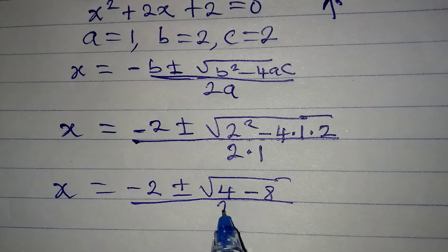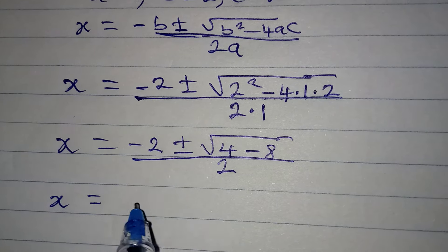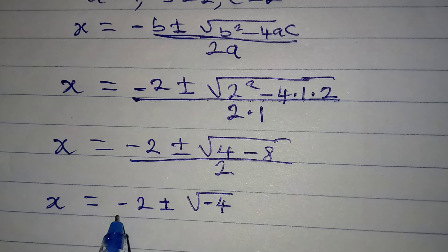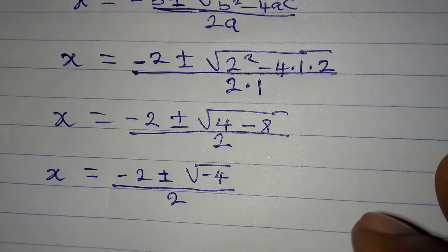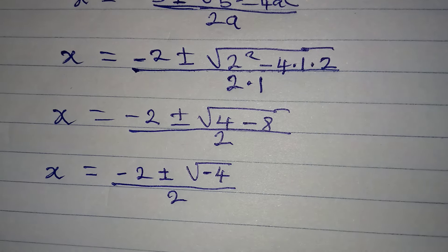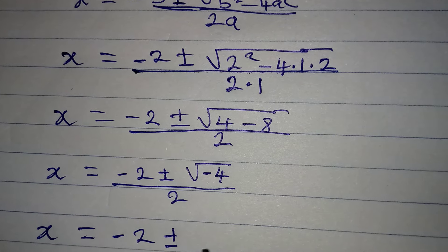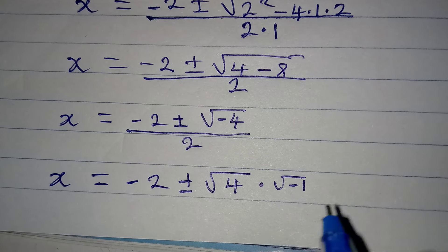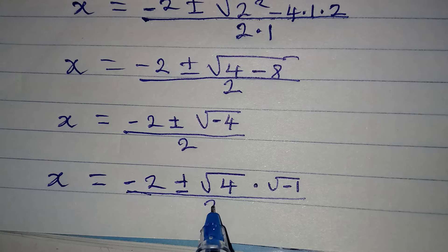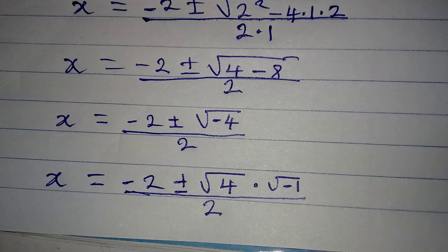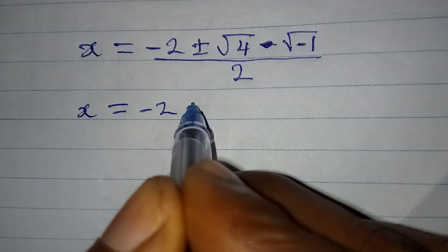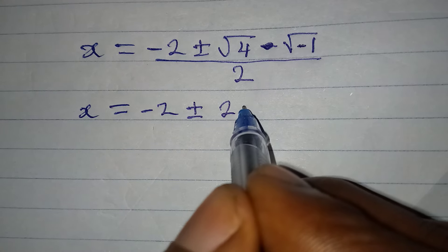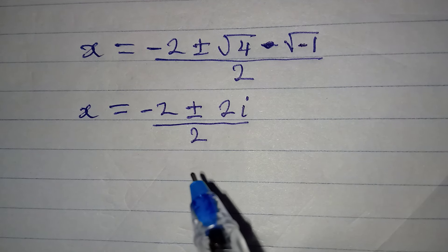Continuing, x equals minus 2 plus or minus the square root of negative 4, all over 2. Remember this is the same as x equals minus 2 plus or minus the square root of 4 multiplied by the square root of negative 1. So x equals minus 2 plus or minus — the square root of 4 is 2 — then the square root of negative 1 is i, all over 2.